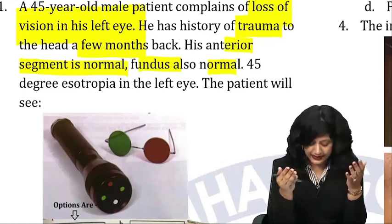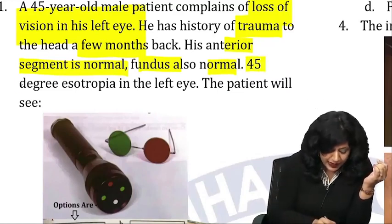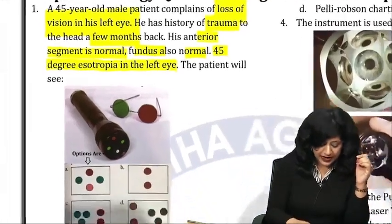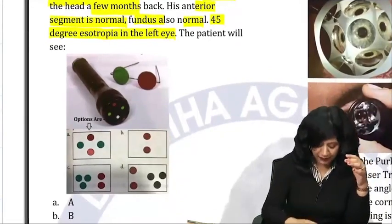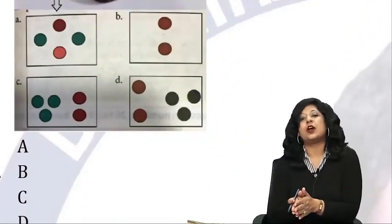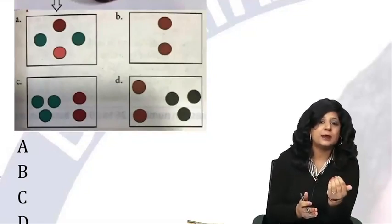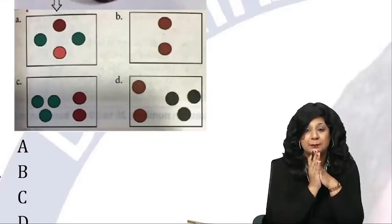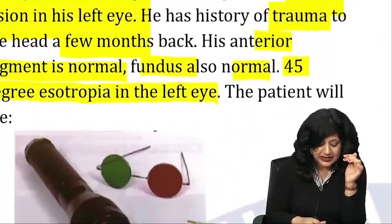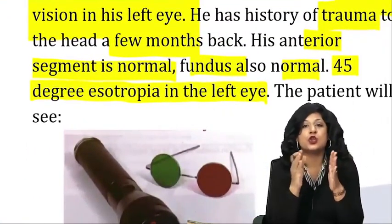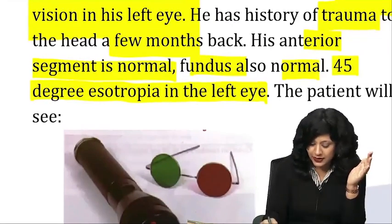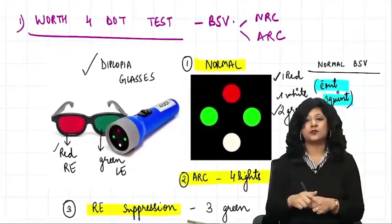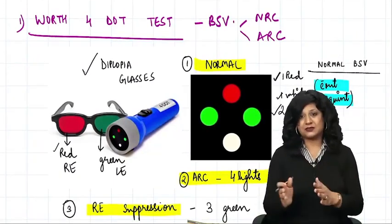Now, the moment you saw this, you must have marked the diplopia option. Why? Because there is esotropia — esotropia means squint, and squint means diplopia. But the examiner has specifically said anterior segment normal, fundus normal. Before we go to the answer, let us first see the concepts of this test, because a few students were asking about it. This is actually called the Worth Four Dot Test.